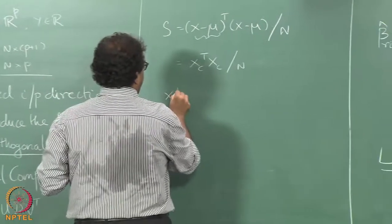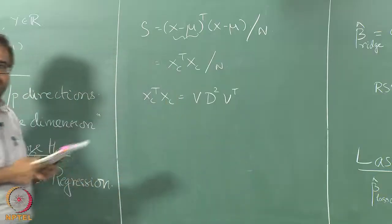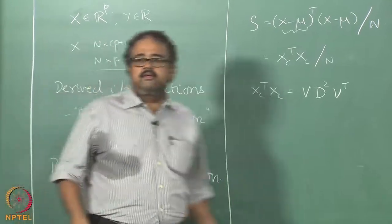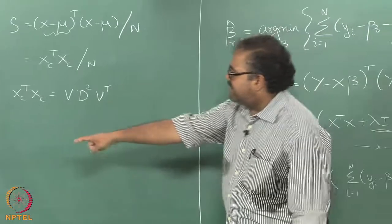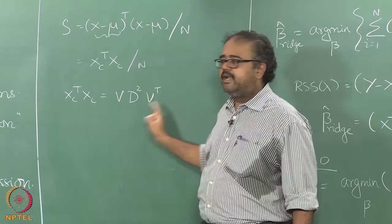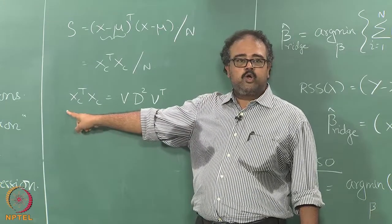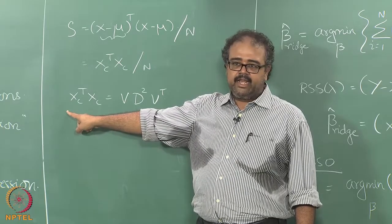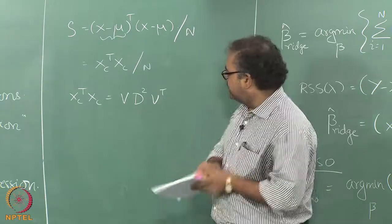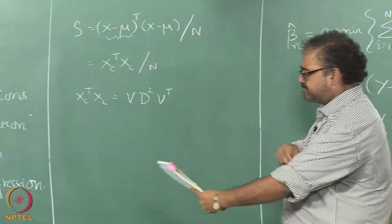The same V and D that I wrote for SVD — assuming the data is centered — if I take X, I essentially get the same thing. It is like doing singular value decomposition and retrieving the V matrix. I am taking X transpose X, which is the covariance matrix of the centered data, and finding the eigenvalue decomposition. D squared would correspond to the eigenvalues of X transpose X. This is standard.